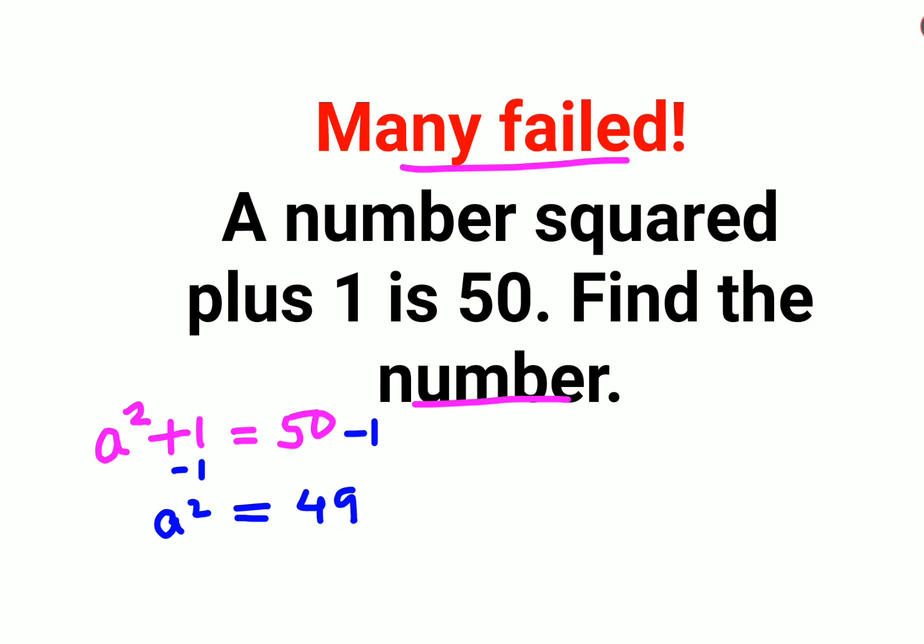Now understand, whenever you have a variable squared and you need to take a square root, the answer will get you a plus minus sign. So this will be what? The answer for square root of 49 is nothing but plus minus 7.